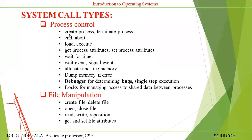Coming to the process control system calls: create the process, terminate the process, end the process, abort the process, how to load the process, execute the process, get the process attribute, set process attributes, wait for time, wait for an event, signal for an event, allocate and free memory, dump memory if errors, debugger for determining bugs — these are the process control system calls.